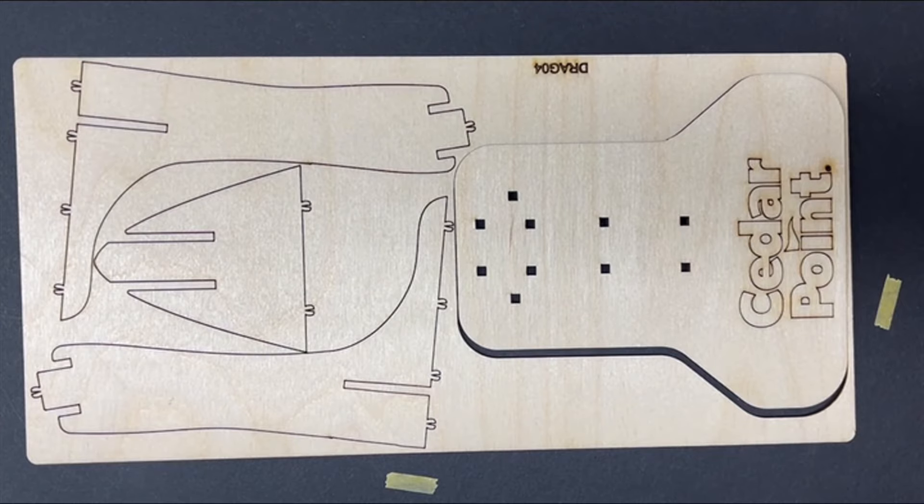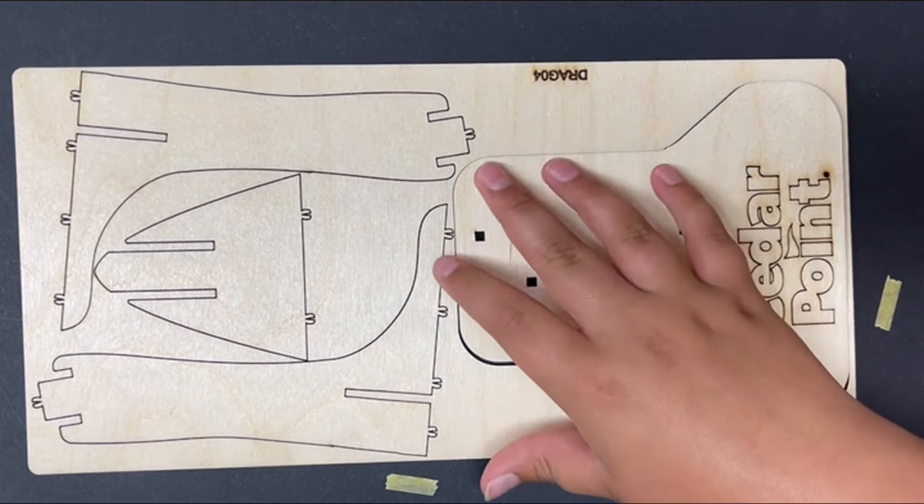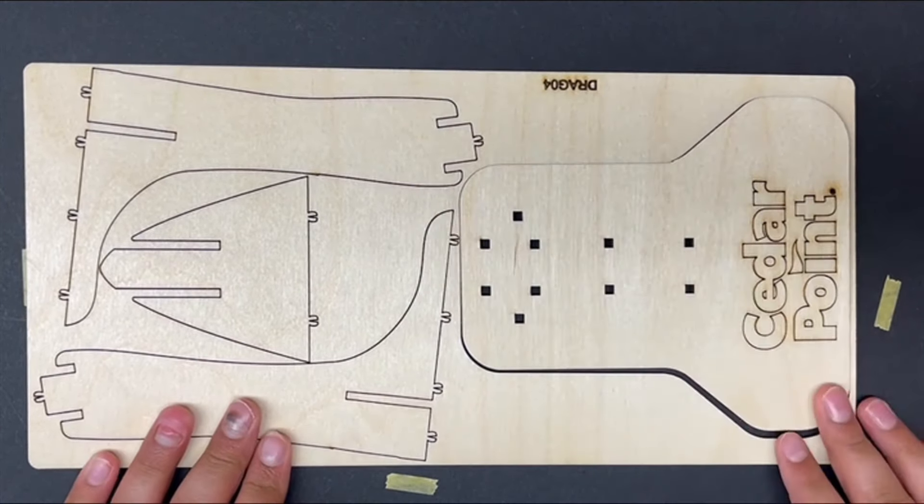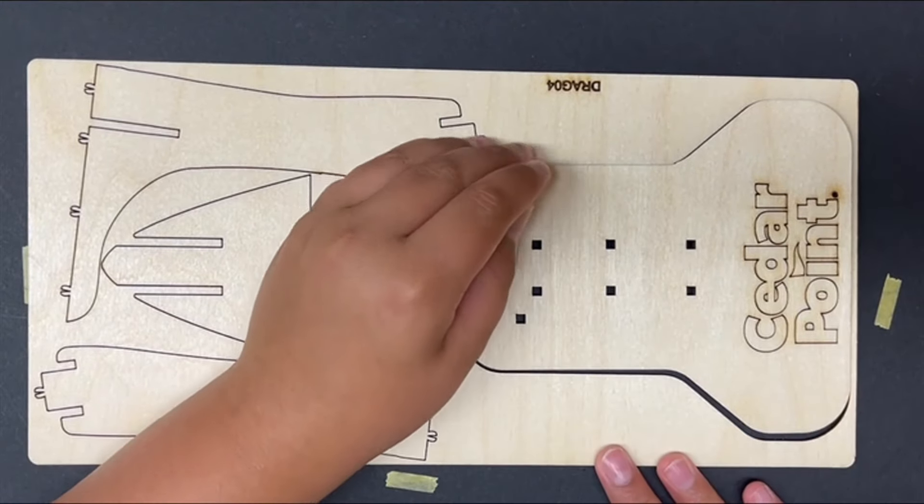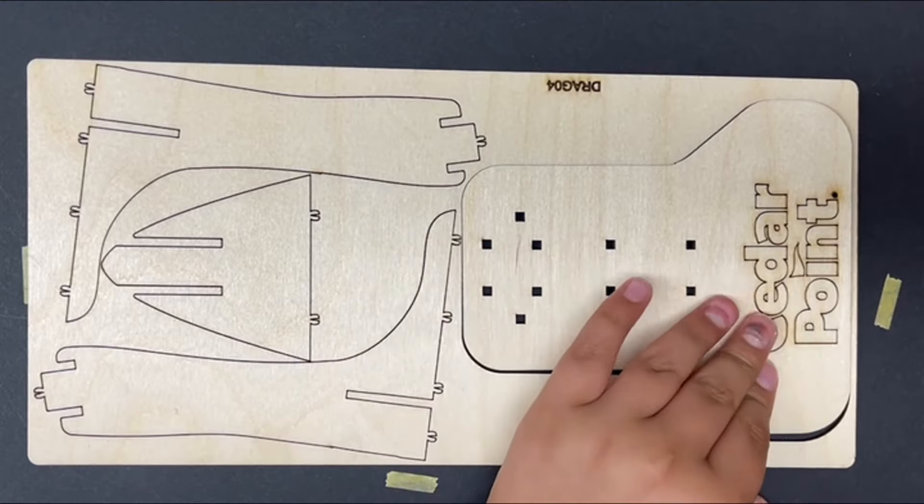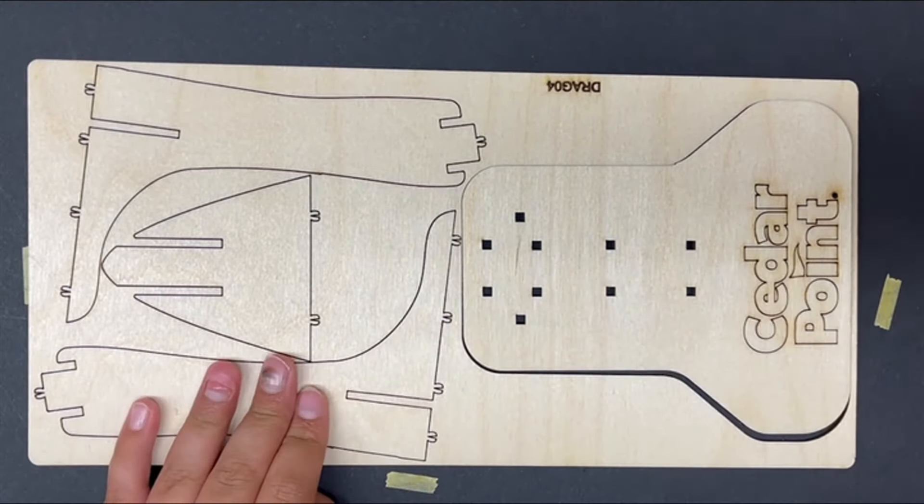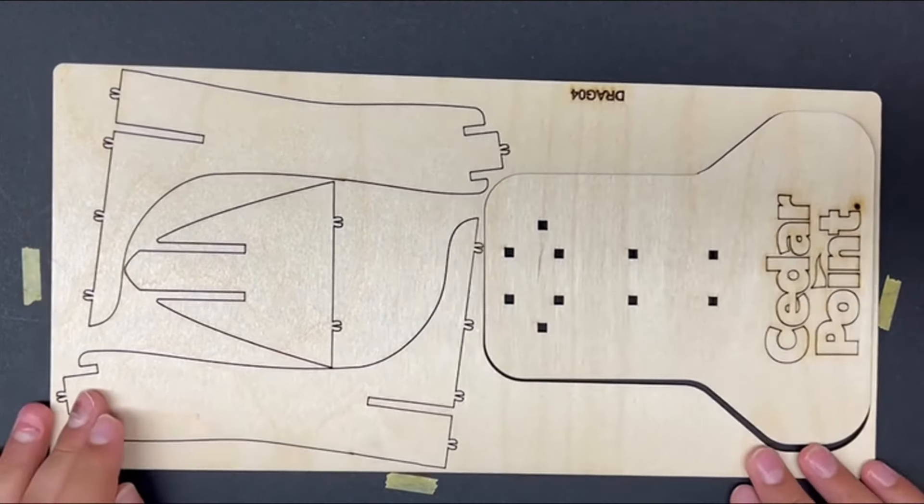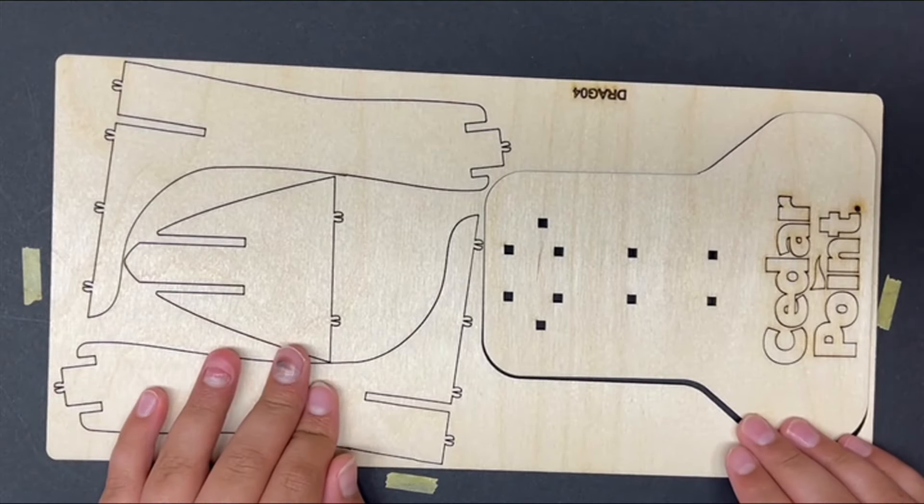Cedar Point is a theme park and it's a bunch of rides and water rides. Where is it? It is in Sandusky, Ohio on an island. So you had to cross a bridge to get to it. It's really cool.